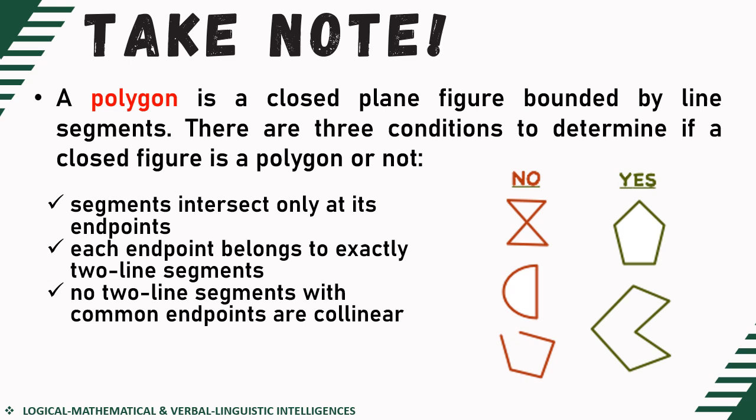As you can see, I have here examples of polygon and the non-polygon. For our polygon, by definition, it should be a closed plane figure bounded by line segments. As you can see, we do have line segments which enclose the given figure.